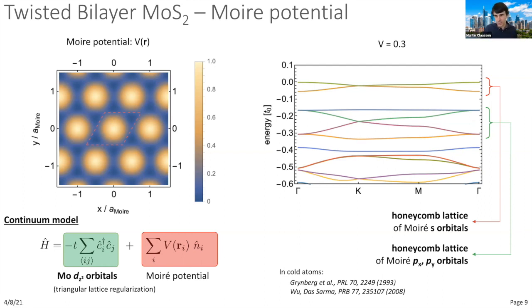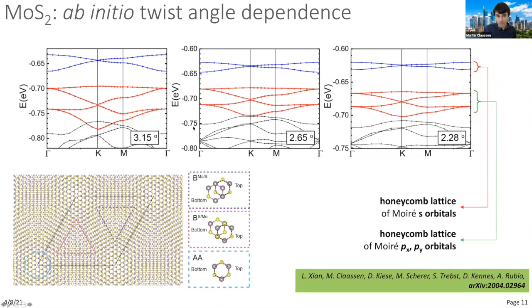This is just a toy continuum model; we really need large-scale ab initio simulations accounting for lattice relaxations to assess realism. Using heroically large-scale simulations with thousands of atoms in the unit cell—studying full relaxation of these large supercells—here shown for three representative twist angles of bilayer MoS2 at a twist, we see nicely the honeycomb lattice s-orbital bands arising at the top of the band gap, with the next set of bands becoming progressively more isolated as we go to lower twist angles, giving a second set of bands forming precisely the honeycomb lattice of px and py orbitals.